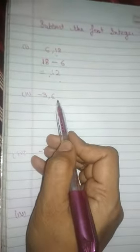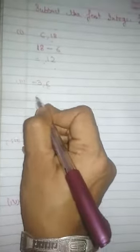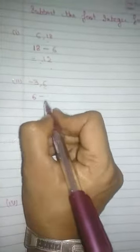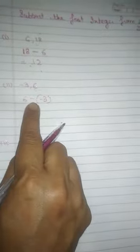Now next example. Minus 3 and 6. What is the second integer in this? The second integer is 6. Then write down subtraction sign, then your first integer minus 3. Then you get 6.